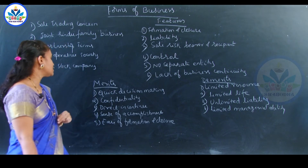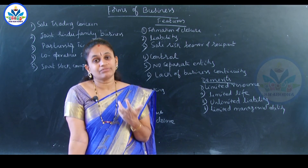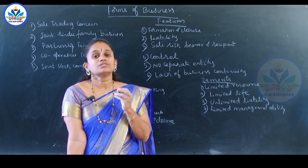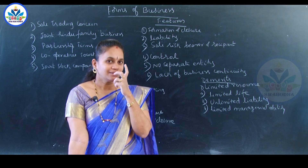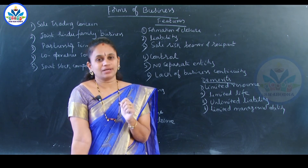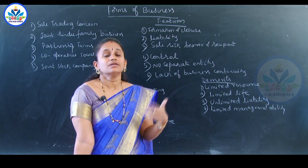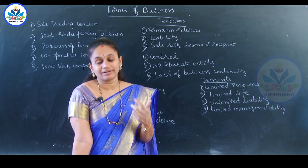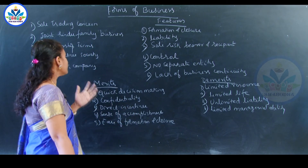The second advantage is confidentiality. The amount of money you have invested is confidential. The contacts and customers you have are also confidential. For example, in Dakshina Kannada, Kalladka tea is very famous — the recipe of that tea is unique and not available elsewhere. They do not share it because it is their business secret. If they share it, another person will start the same kind of hotel and become equally famous. So the trade secret would no longer be confidential. That confidentiality can be maintained in a sole trading concern.